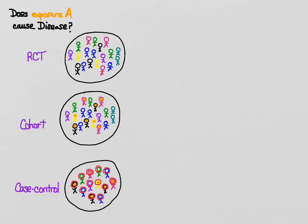The classic case is tobacco use — smoking cigarettes. Over the years, as evidence built for the case that smoking caused lung cancer and other problems, the tobacco companies constantly said you can't prove that because you need a randomized controlled trial to experimentally prove it. And that really was unethical since the evidence was building.